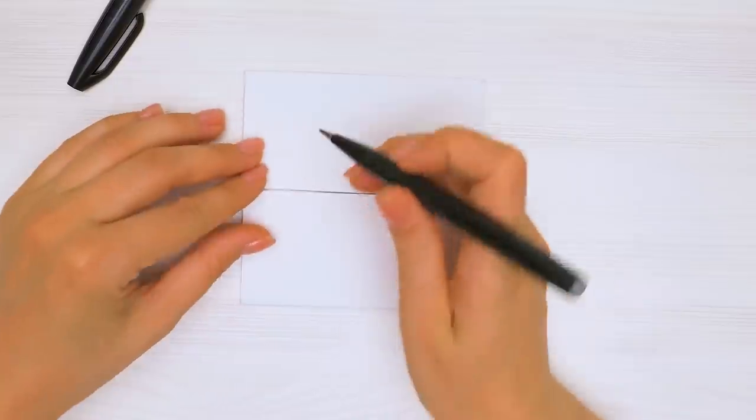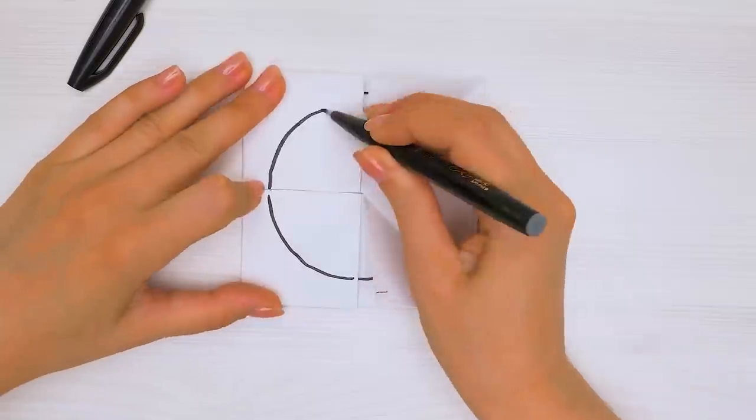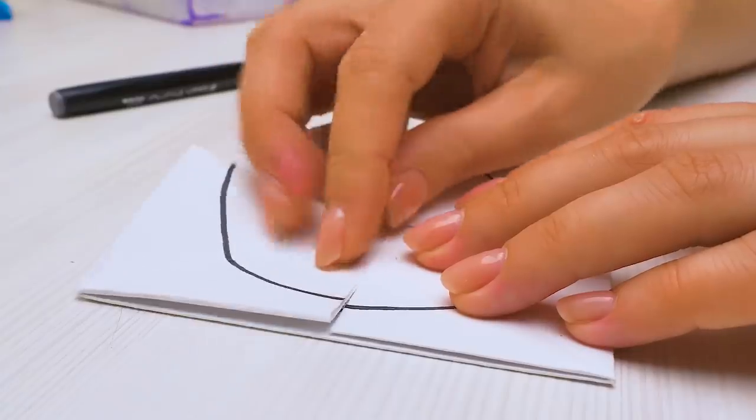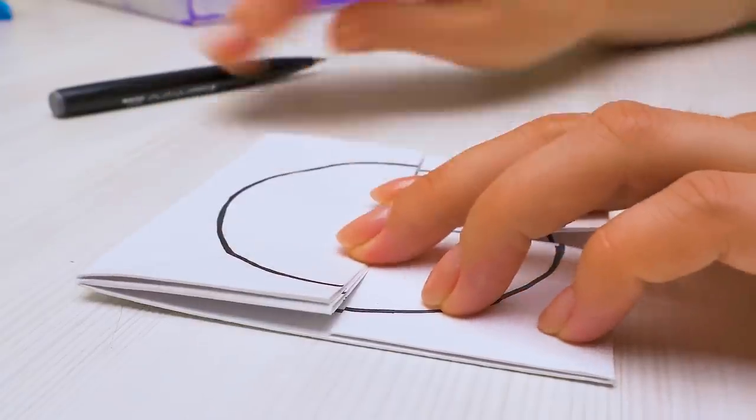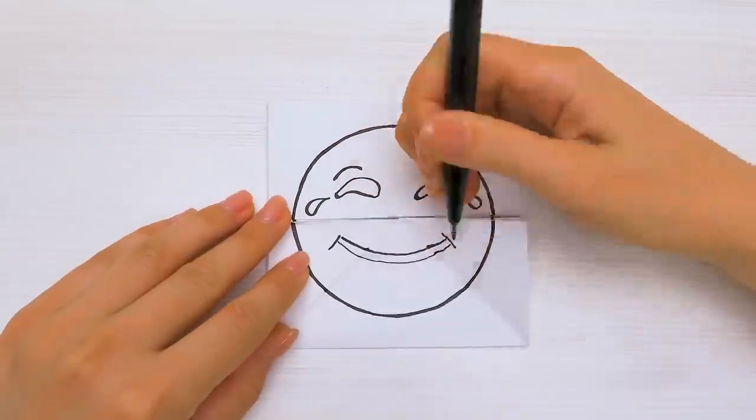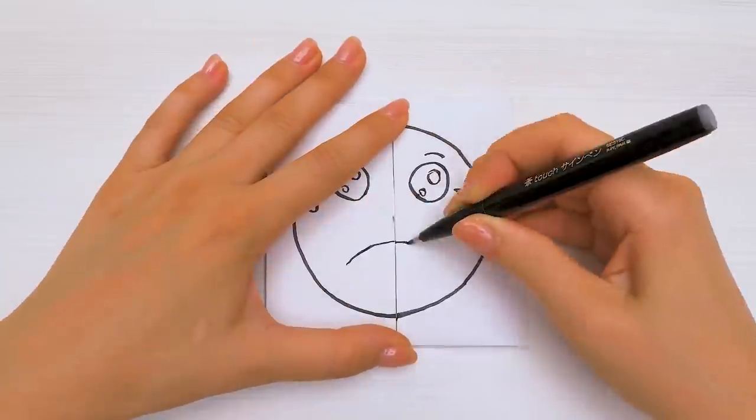Now, we need to draw a circle over the surface of the square with a marker. And let's add some emojis! Let's fold these.